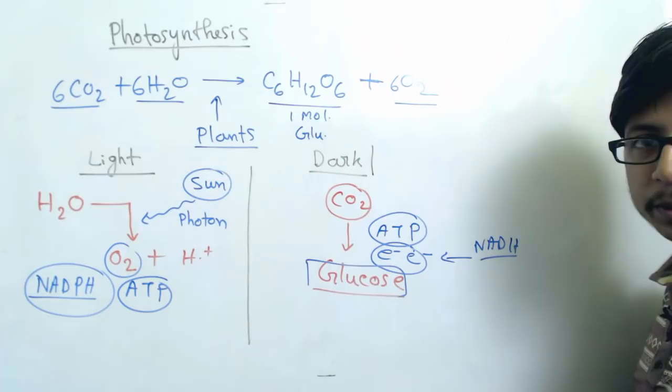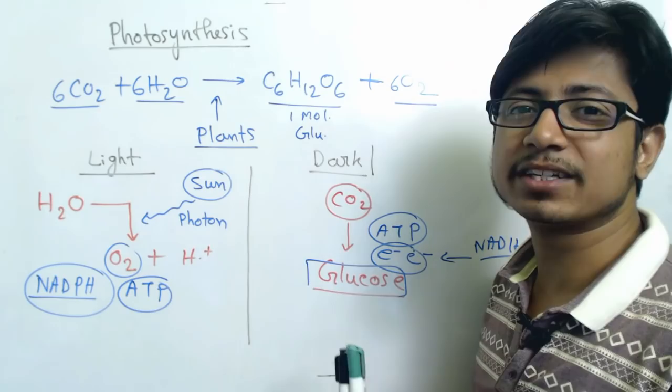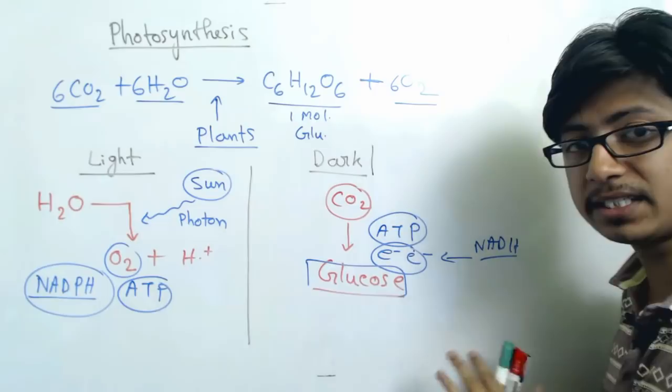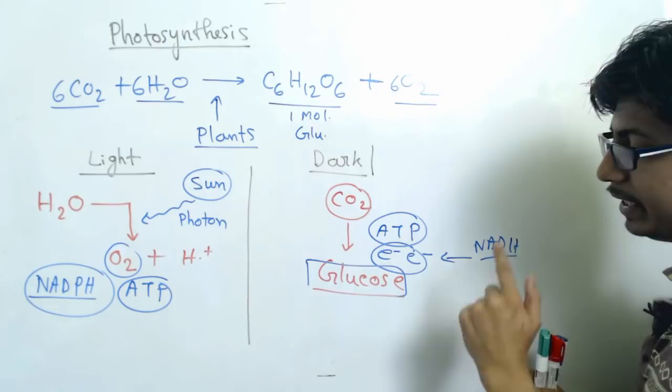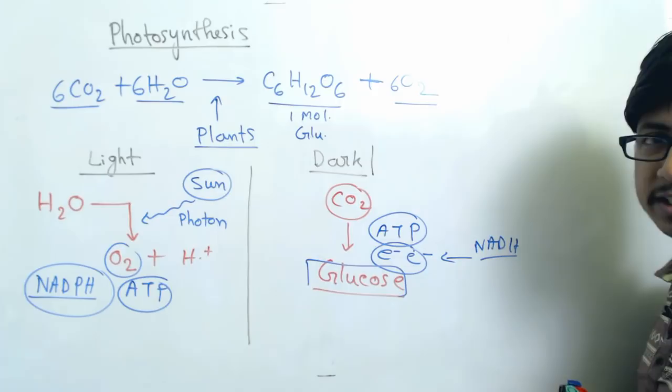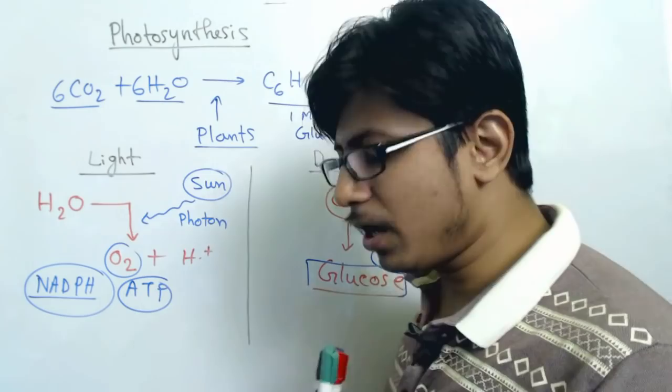This is the general overview: in the first reaction — the light-harvesting reaction — we use energy from light to convert it into ATP and produce electron-carrying compounds like NADPH, and we also release oxygen. In the second step, plants utilize carbon dioxide and the electrons donated by NADPH, and in the presence of ATP, convert carbon dioxide into glucose. So those are the two separate stages: the first stage producing oxygen, and the second stage producing glucose.